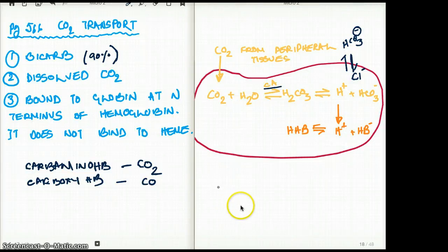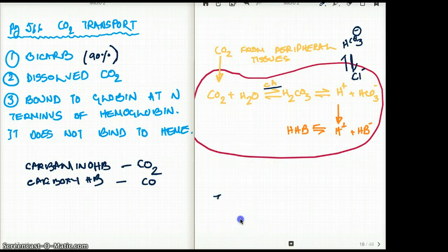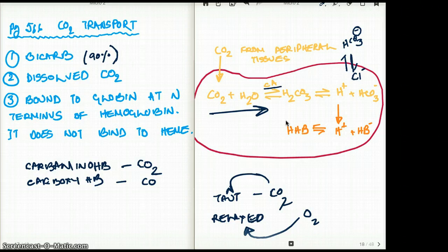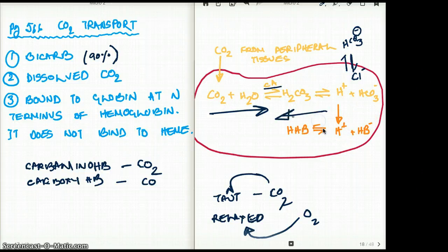I also talked about two forms of hemoglobin: the taut form and the relaxed form. The binding of carbon dioxide favors the taut form, and the binding of oxygen favors the relaxed form. So when there is too much carbon dioxide in the system, the equation moves to the right and we have more taut form. But if there is more oxygen bound to hemoglobin, the equation moves to the left and we have more relaxed form.